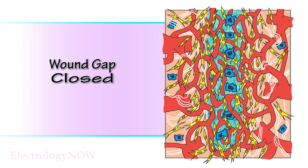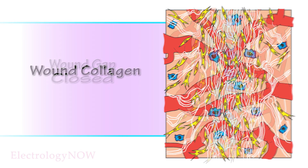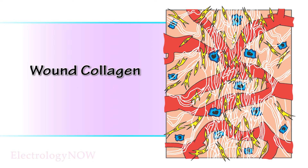As wound healing progresses, the capillary loops are gradually replaced with normal blood vessels, and the spots disappear. Now the wound is packed with wound collagen. This initial filler is dense and not well organized. Certain fibroblasts called myofibroblasts pull the wound inward and downward, so the wound gap gets smaller. In electrolysis, this pulling-down action can cause the appearance of tiny pits. As healing progresses and the myofibroblasts relax, this effect goes away completely.